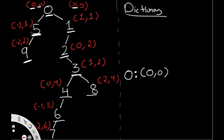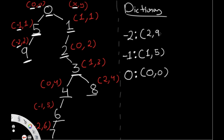Going left to node 5, we add key -1 → (1, 5). Then further left to node 9, we add key -2 → (2, 9), and so on. For node 1 on the right side, we add key 1 → (1, 1). Each entry in the dictionary maps the horizontal distance to a list of (Y, value) tuples.